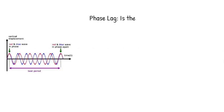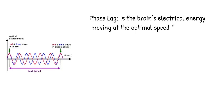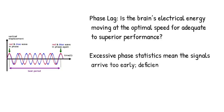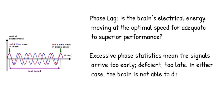The QEEG provides information about phase lag — the speed of information flow in the brain. When the speed is not optimized, information will arrive too early or too late to be properly utilized.